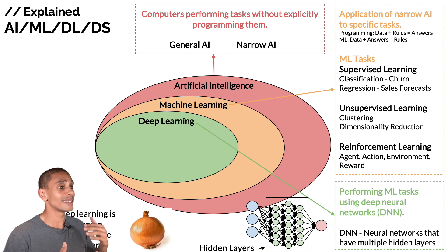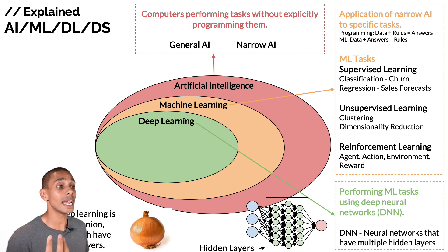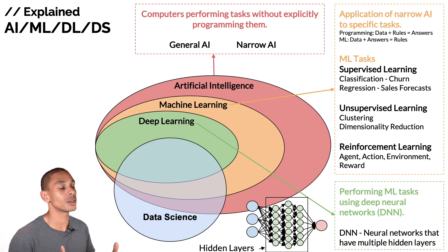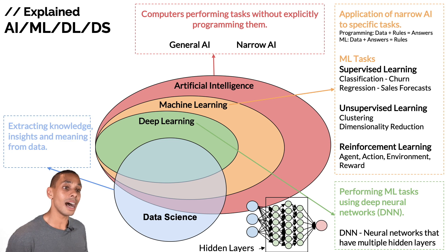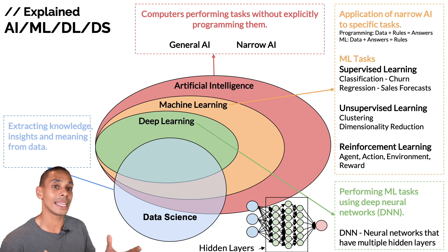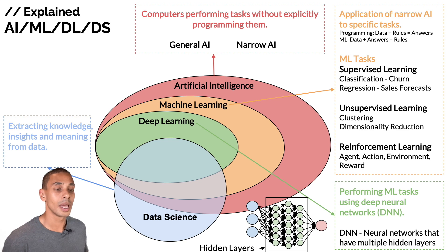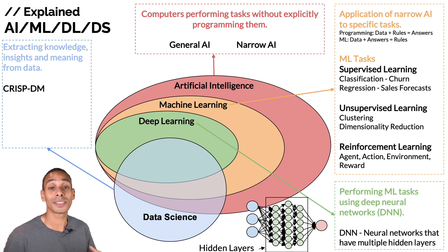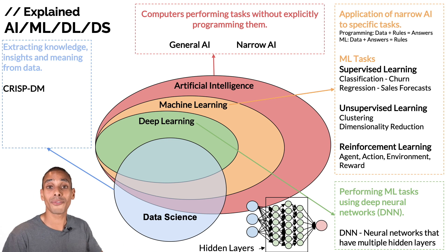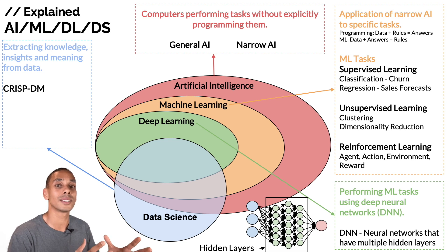That covers AI, ML, and DL. What about data science? Data science is the practice that sits over AI, ML, and DL — it's basically the art of extracting knowledge, insight, and meaning from data. The best way to remember the key components of data science is to look at the CRISP-DM framework, which stands for the cross-industry standard process for data mining — a framework to help you produce really good data science projects.